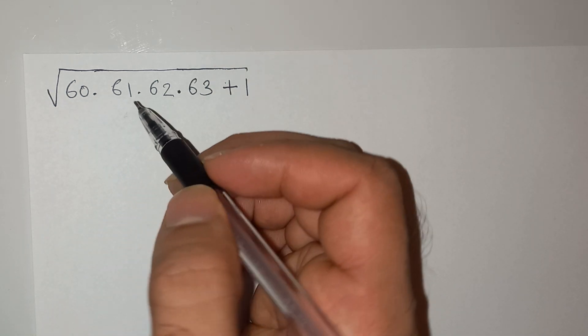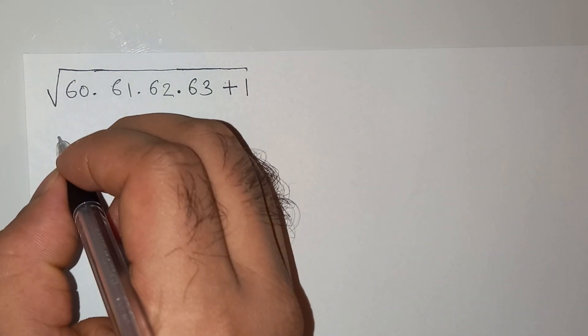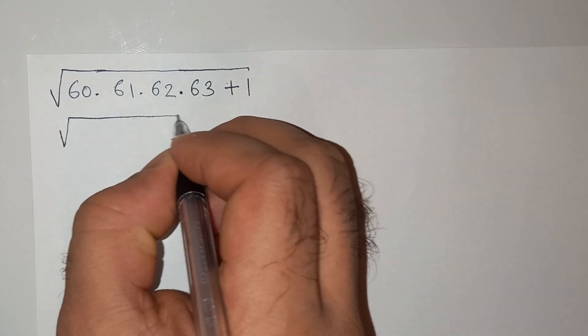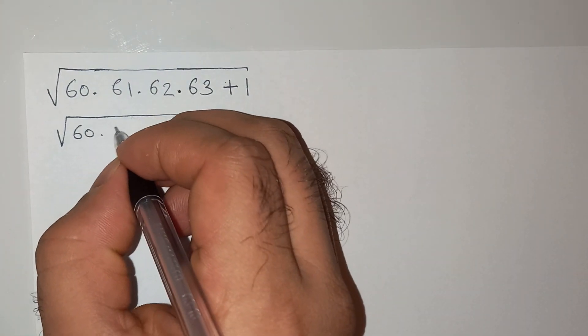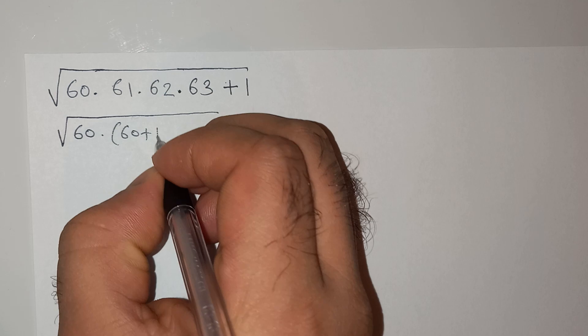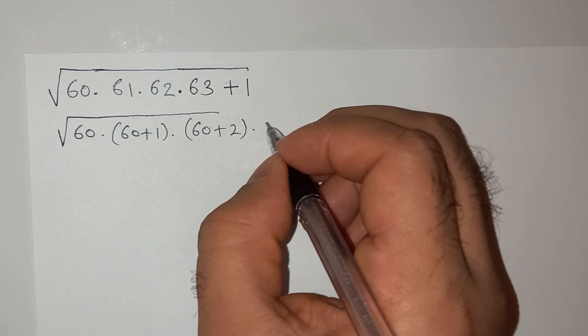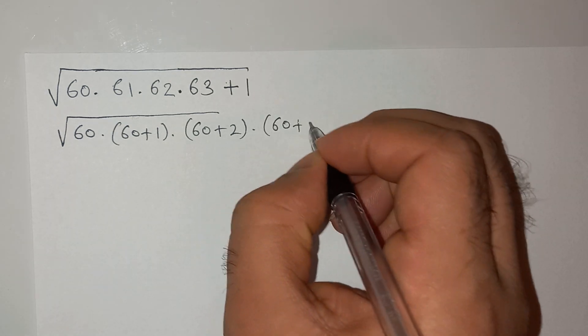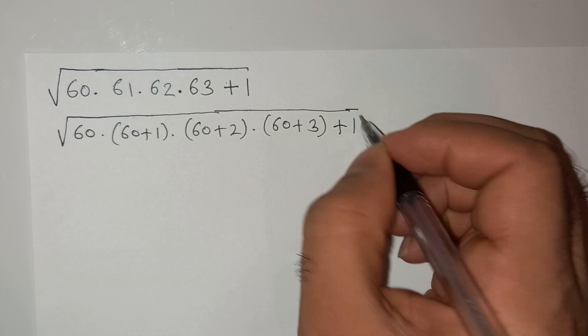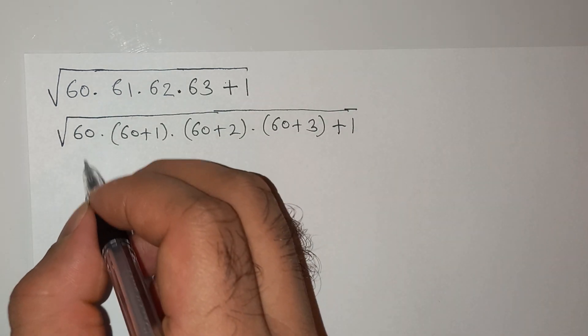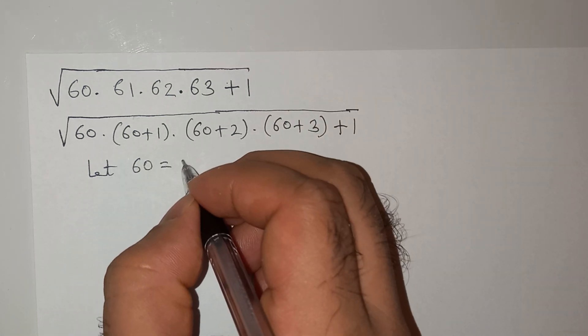What we can do is we can say that this can be written as 60 × (60+1) × (60+2) × (60+3) + 1. Now let 60 equals to x.